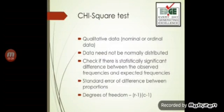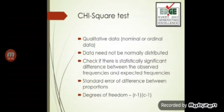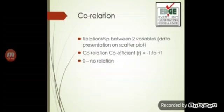Chi-square is also used in reference to degrees of freedom, and this question has been asked quite a number of times. The formula for degrees of freedom is: (rows minus one) multiplied by (columns minus one), that is (r − 1) × (c − 1).